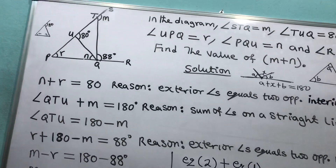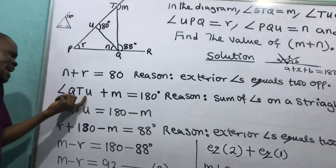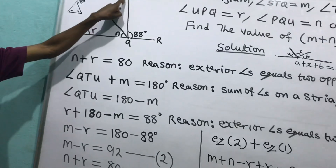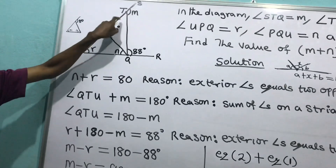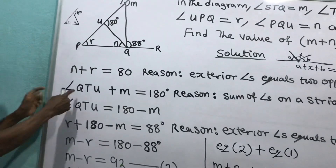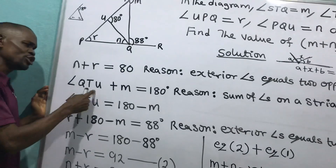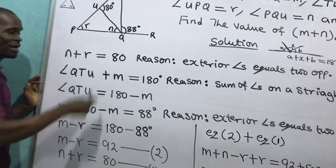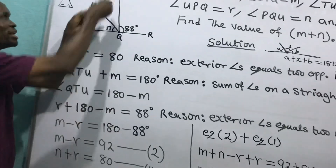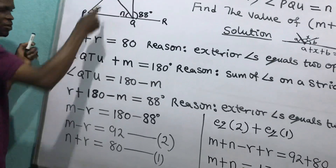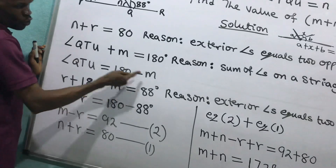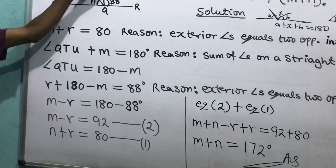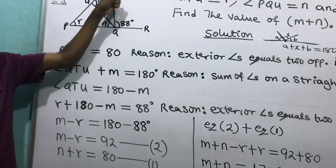That's 180 degrees. Making this angle the subject of formula, angle Q-T-U equals 180 minus M. That means the angle here equals 180 minus M.